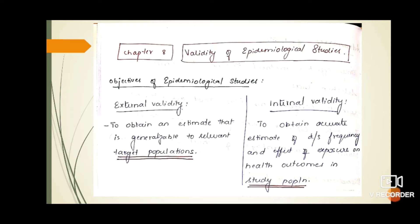External validity means that the results of that study should be able or it should be generalized to the total target population on which that result is going to be benefited of.